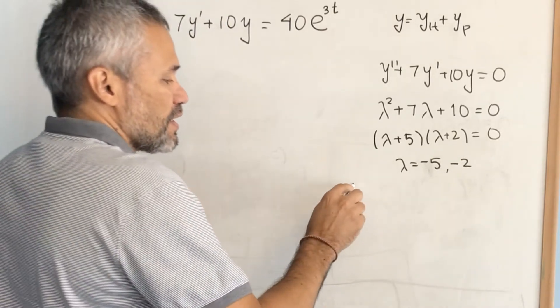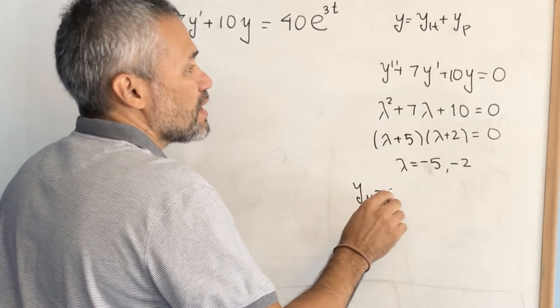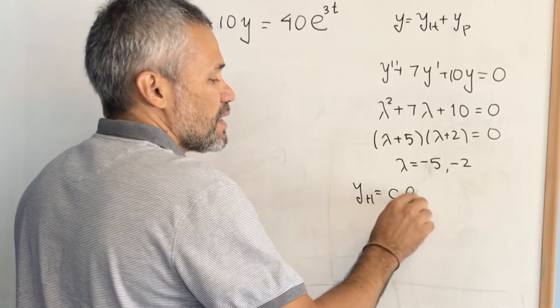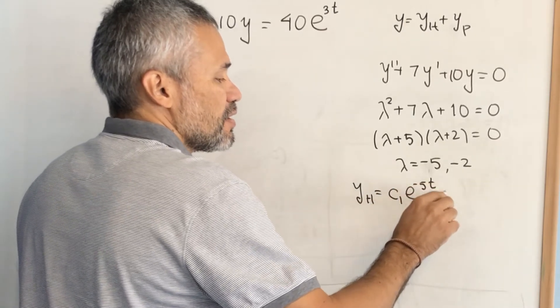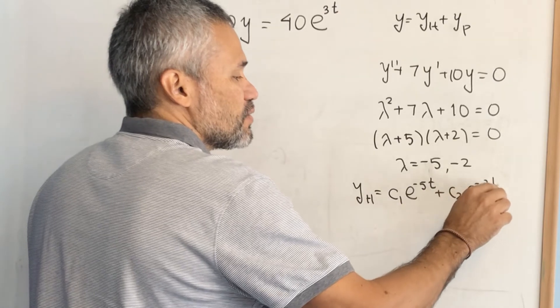Therefore, the general solution of the homogeneous is c1 e to the negative 5t plus c2 e to the negative 2t.